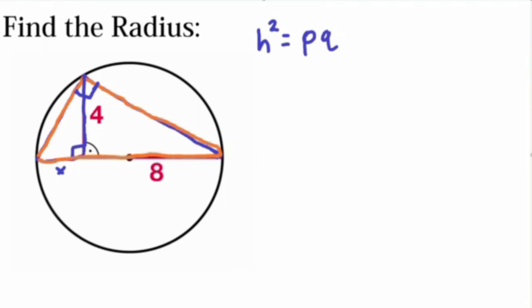Well, what is p times q? p times q is the two side lengths that we have on our hypotenuse here, so our 8 and our x, right?